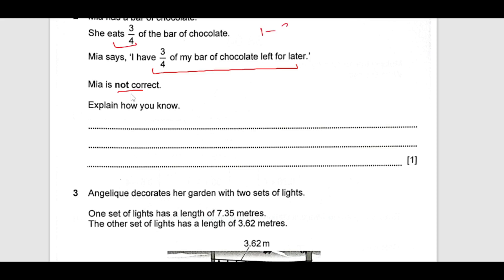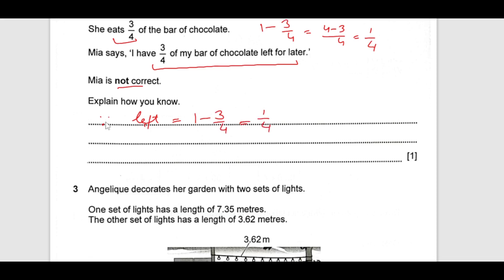What is left? She is left with 1 minus 3 over 4, which is 4 minus 3 over 4, that is 1 over 4. But she is saying 3 by 4. So, that means she is not correct. We will write down because the left over is, what she is left is 1 minus 3 over 4, which is 1 over 4. That is why she is wrong.